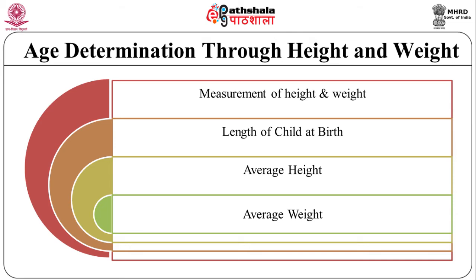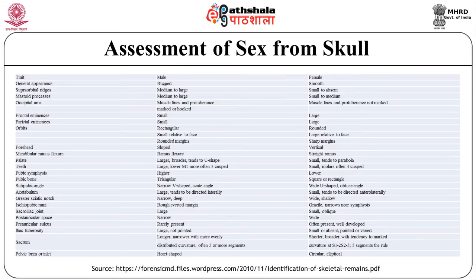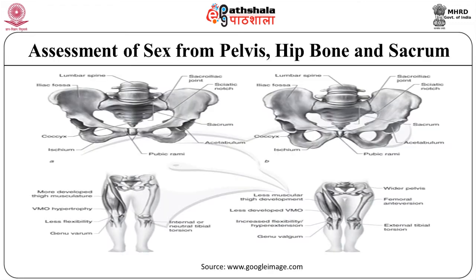Then comes assessment of sex from the skull. Looking at the table, we can explain how to determine or assess sex. Now, assessment of sex from the pelvis, hip bone or sacrum: the best bones for the determination of sex are those of the pelvis, which has an accuracy of 98% when properly examined. The pelvic bone, also called the innominate, is composed of three bones: the pubic, the ischium and the ileum.